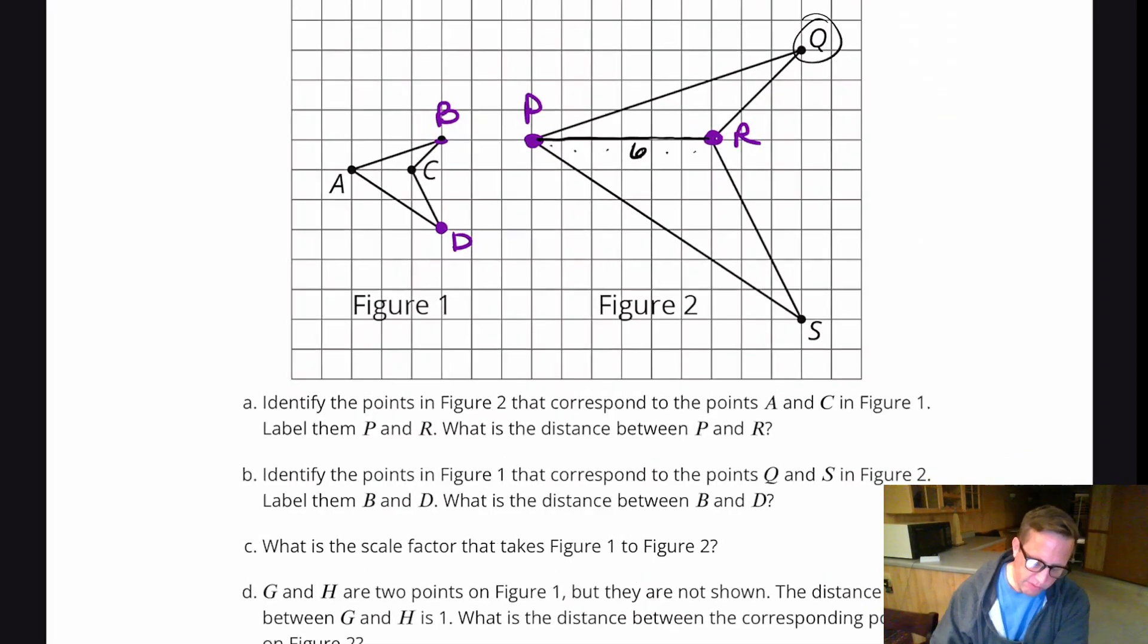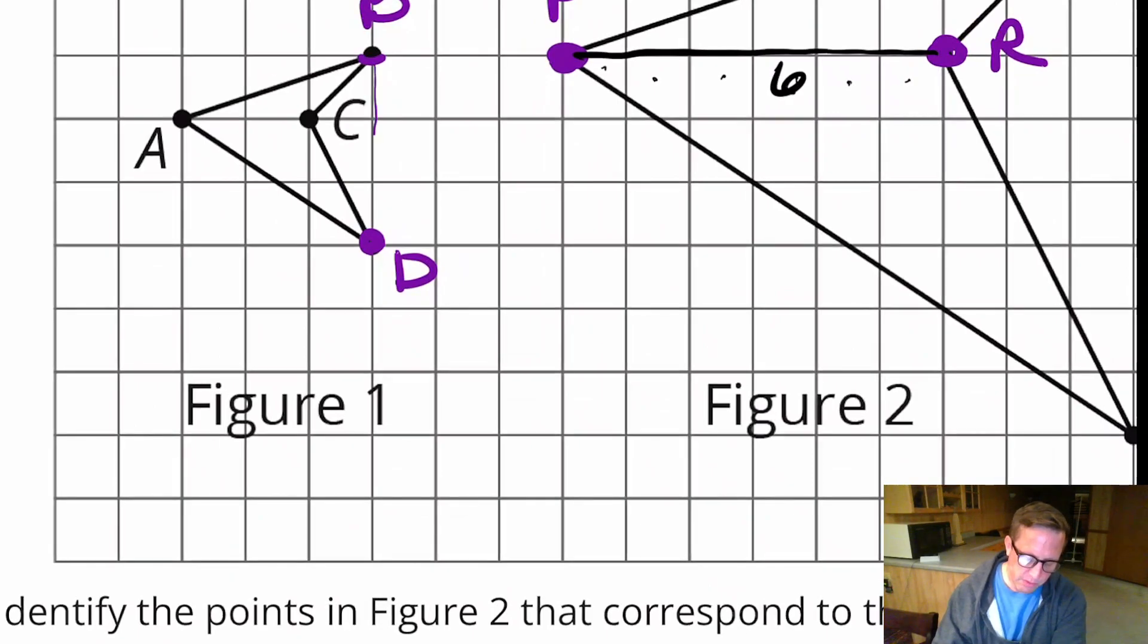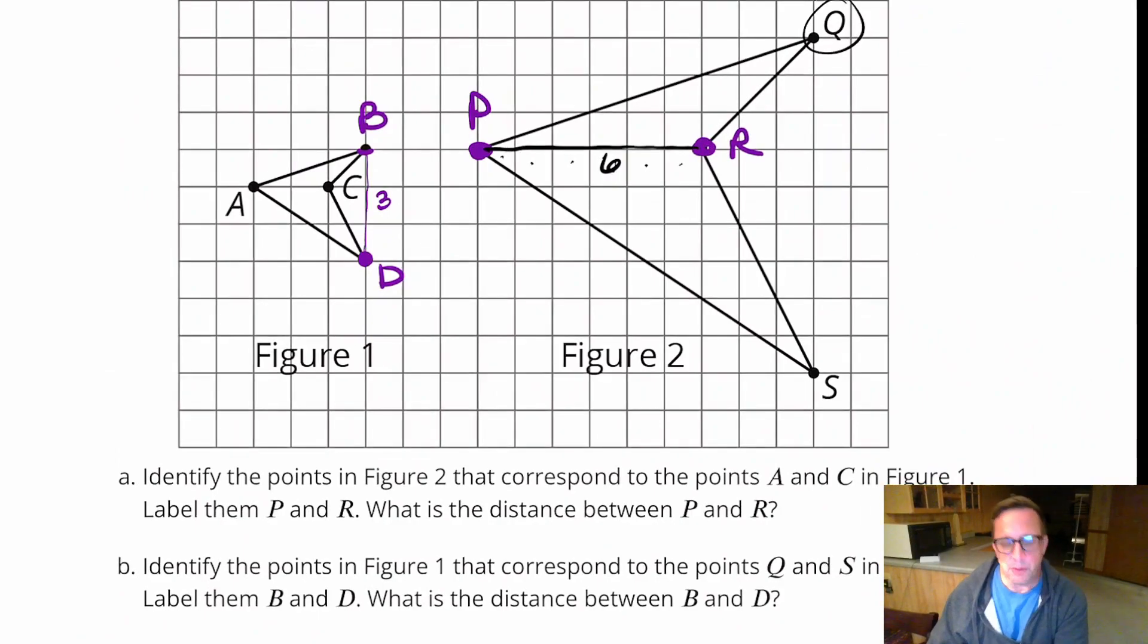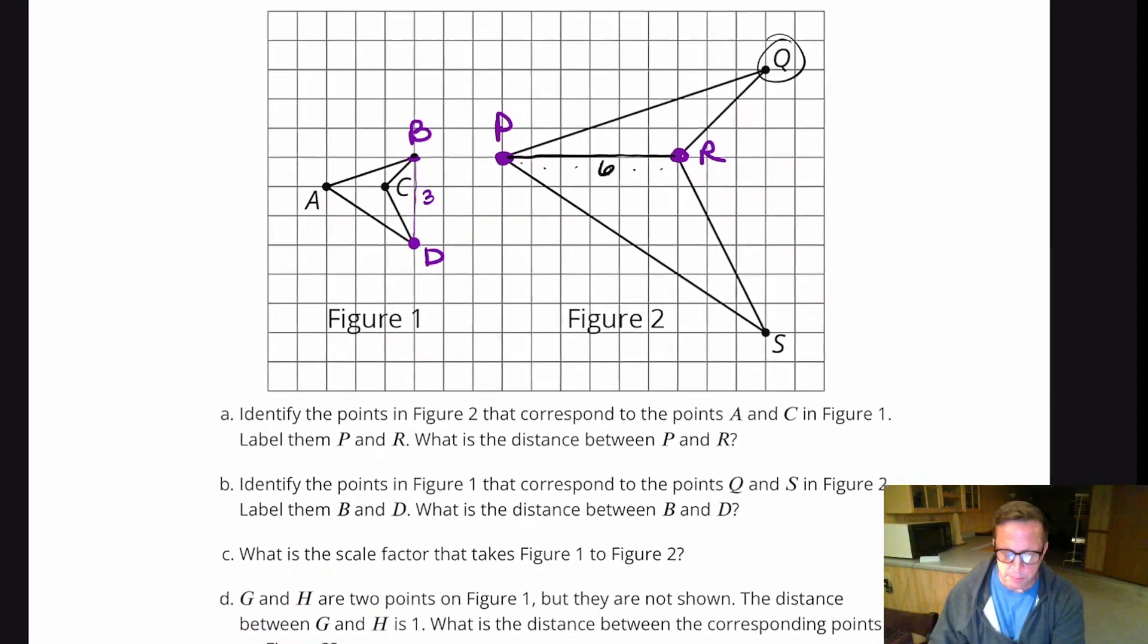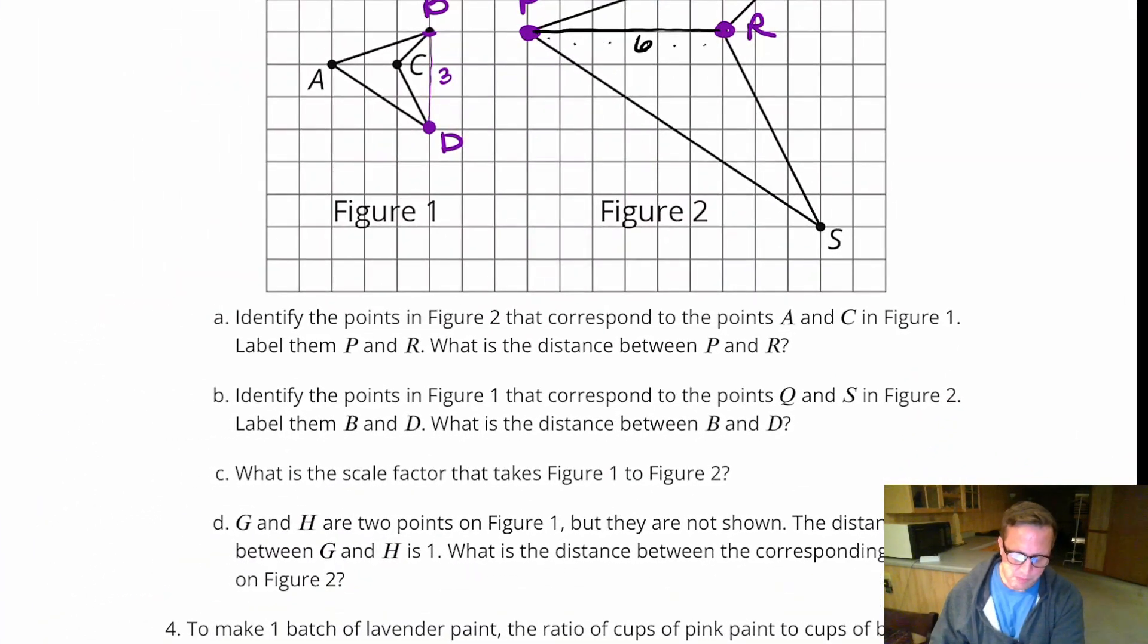We're going to call this D right there. And what is the distance this time? The distance from there to there, that's three units. That's three units. Straight line distance is three. All right. If we're following the path of that polygon, that might be a little bit different. But I don't think that's what it's asking.